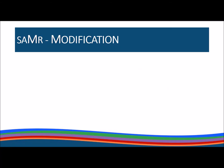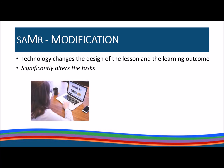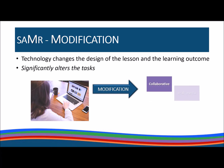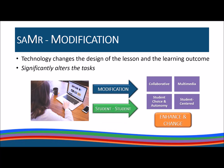Transformative learning begins with modification, the M in SAMR. Modification means we are using technology to effectively change the design of the lesson and its learning outcomes — it significantly alters the task. Students can collaborate in shared documents or forums where they curate and exchange information. The written report becomes a multimedia project posted for peer feedback, reflection, and review. Student choice and autonomy are enhanced as interaction with technology shifts to student-to-student and learning becomes more student-centered.